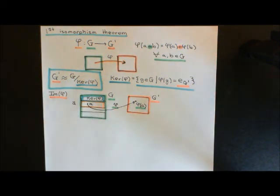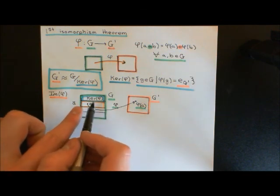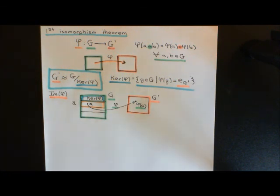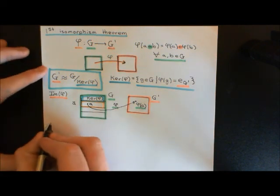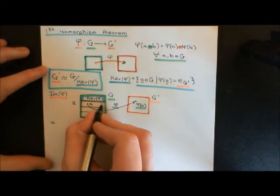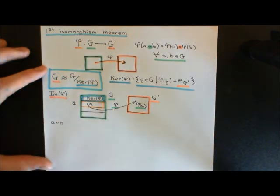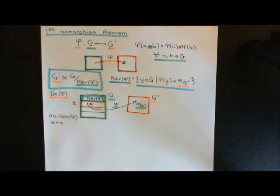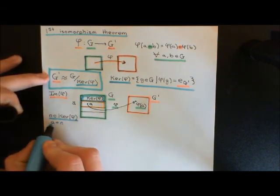What is an arbitrary element within coset a-bar? Well, this is the coset of the kernel of the homomorphism, and because the kernel is a normal subgroup, the left and right cosets are identical. We go for the left coset under element little a, which means an arbitrary element of coset a-bar can be written in the form little a composed with some little n, where little n is some arbitrary element of the kernel of the homomorphism.